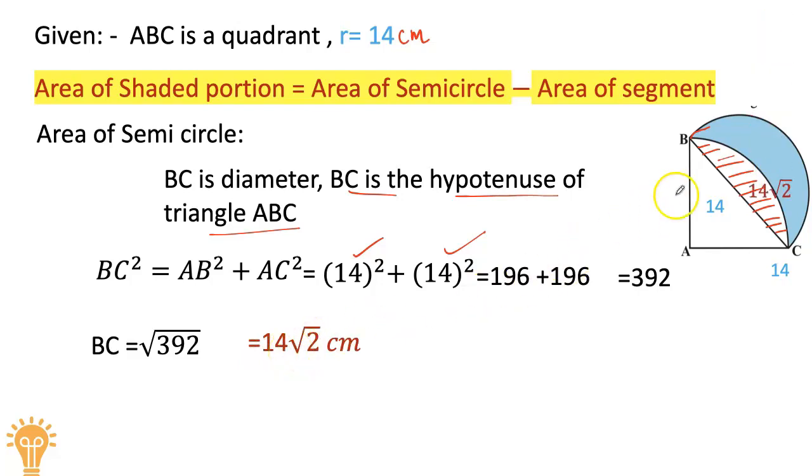The length of BC is √392 = 14√2. So the radius of the semicircle is half of that, which is 7√2.